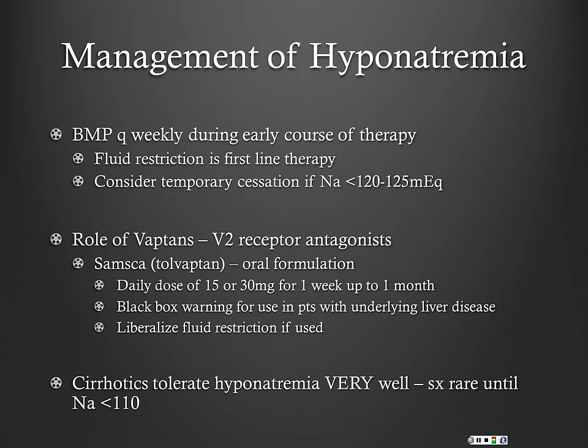The vaptans have been used in cirrhosis and other conditions such as polycystic kidney disease. The oral form is called tolvaptan, or Samsca, and we've used this quite a bit in our cirrhotics — generally it's been very safe. The dose is 15 or 30 milligrams daily.